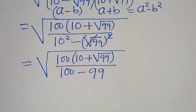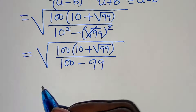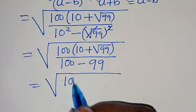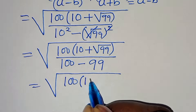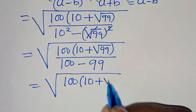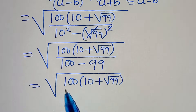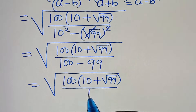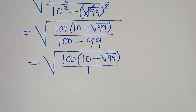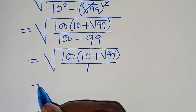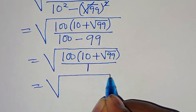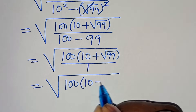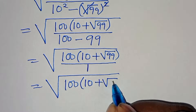So we have the square root of 100 multiplied by the quantity 10 plus square root of 99, all divided by 100 minus 99, which equals 1. This simplifies to square root of 100 times the quantity 10 plus square root of 99.